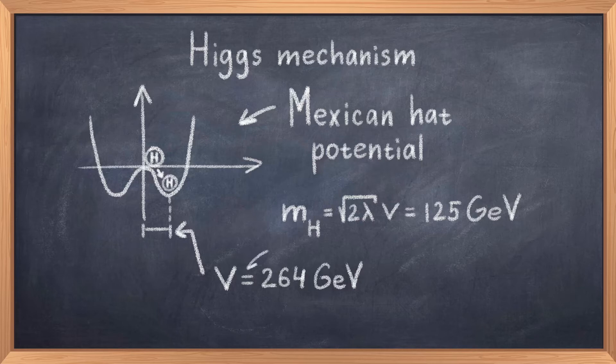But for the purpose of this video, the important part is that this potential and symmetry breaking gives us a massive Higgs boson with a mass of 125 GeV, and a non-zero VEV at 246 GeV.